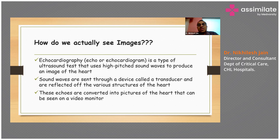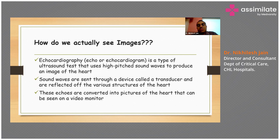So how do we actually see images? Echocardiography is basically a type of ultrasound test which uses high-pitched sound waves to produce an image of the heart. Sound waves are sent via a device called a transducer and they get reflected from the various structures of the heart. These echoes which are reflected are converted into pictures of the heart that can be seen and are reproducible on a video monitor.